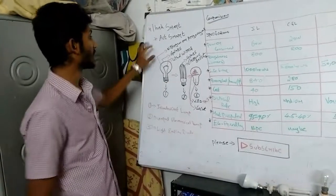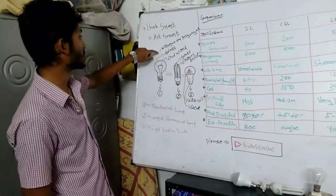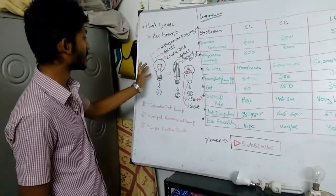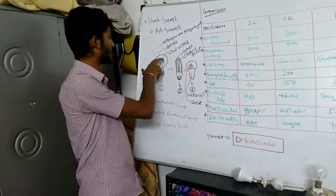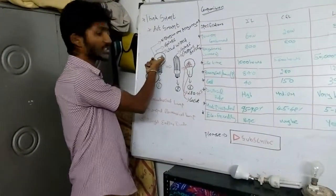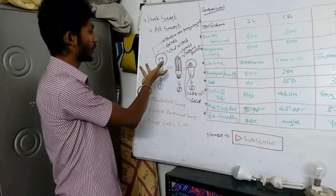This is the incandescent lamp. Incandescent lamp is made up of nitrogen or argon gas. This is made up of glass and LED wires. So when we give the supply, the two wires get heat, and in that case we get the light.